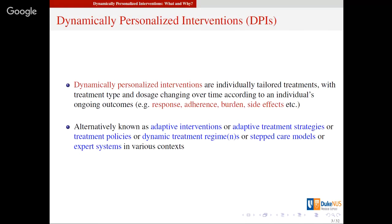It also emphasizes the fact that individuals change over time — that's why the dynamic aspect comes into play. There are many names across different intellectual fields: adaptive interventions, adaptive treatment strategies, treatment policies. In the statistics world we mainly call it dynamic treatment regimes or regimens. People also call it stepped care models, expert systems, or recommender systems — but the key idea is always the same: it's dynamic and individualized.